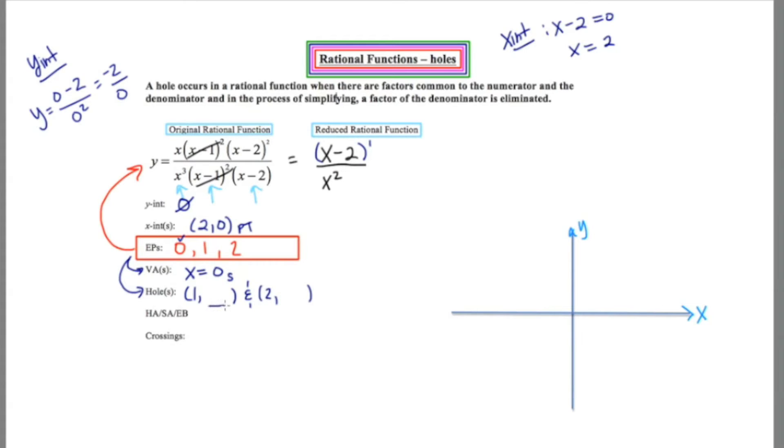To figure out the corresponding y value, we have to plug these values in to the reduced. So let's go ahead and do that up here. The first thing I'm going to plug in is one. When I plug in one, I get (1 - 2) over one squared, which is negative one over one or negative one. Hole at (1, -1).